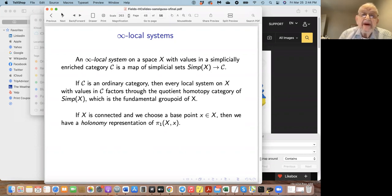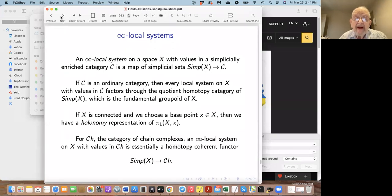On a space X with values in the simplicially enriched category, it's just a map of simplicial sets from simp(X)—I write simp rather than sing because at some point cubes would be important—into the category in question. Now, if it's an ordinary category, then it factors through the quotient homotopy category, which is the fundamental groupoid. Or if we choose the base point, it's the classical holonomy representation of the fundamental group. An interesting candidate for the target category is the category of chain complexes, and so we get essentially a homotopy coherent functor.